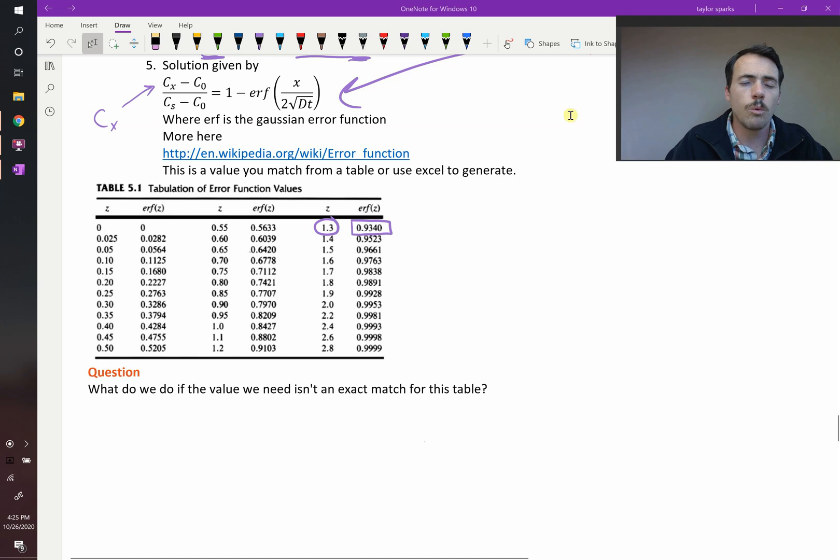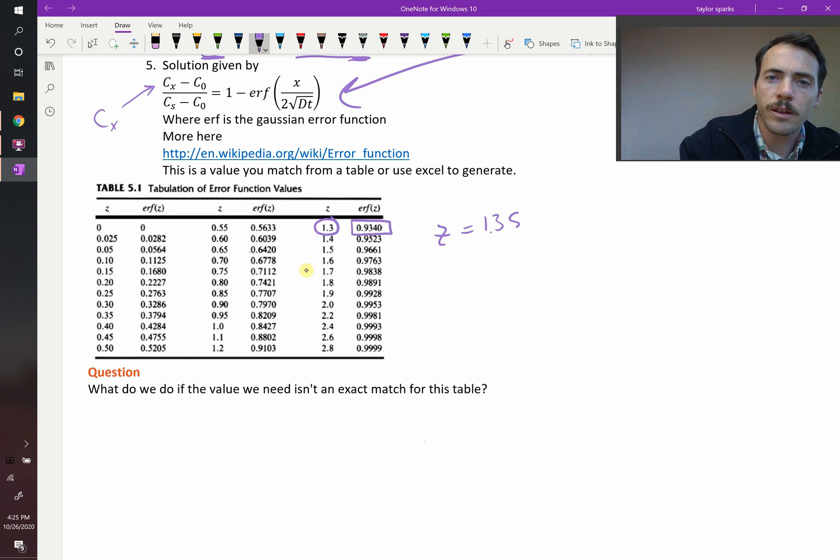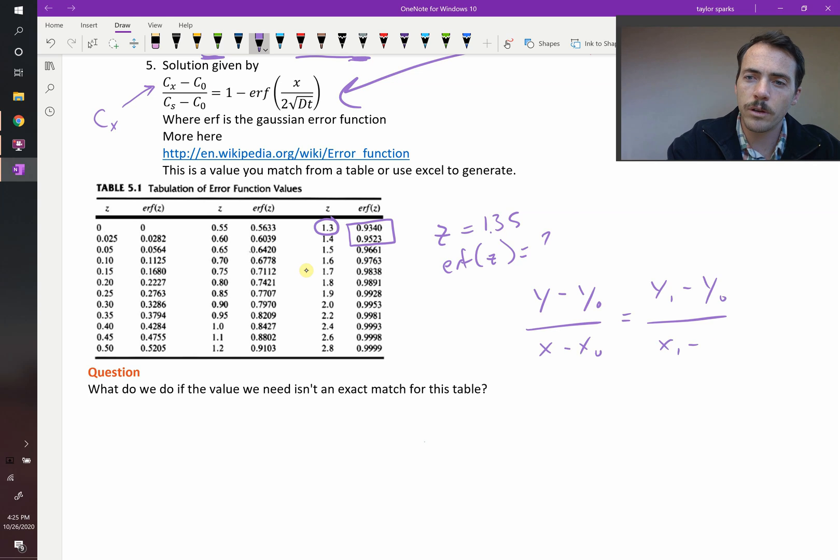However, a good question might be, what do you do if you get a value that's in between those? What if the value of z is 1.35? Then what is the error function of z at that point? It's somewhere between these two numbers, but how do you know what number to use? Well, we need to do something called linear interpolation. I'm sure you saw this at some point in math, but let me remind you if you've forgotten how to do it. We're going to do (y - y0)/(x - x0) equals (y1 - y0)/(x1 - x0). What are all these? X and y are the two things you're trying to solve for if you have different columns here. Y0 and x0 are the values before, the lower values.